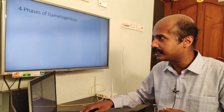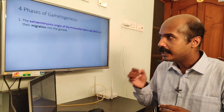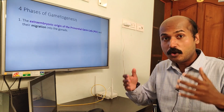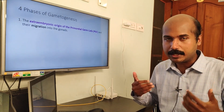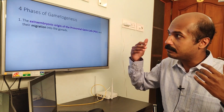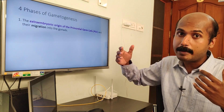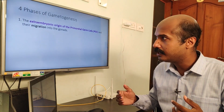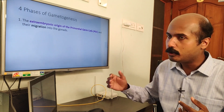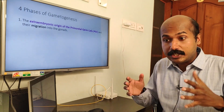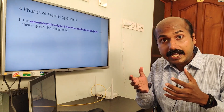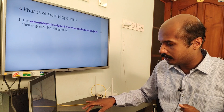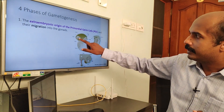Now we can look into the four phases of gametogenesis. Gametogenesis actually begins when the parents were embryos. It begins with the formation of primordial germ cells, written as PGCs. The primordial germ cells begin not within the embryo but extra-embryonically.